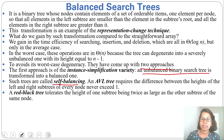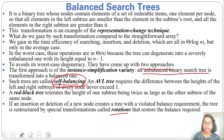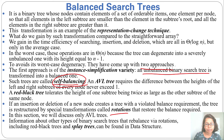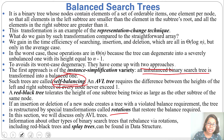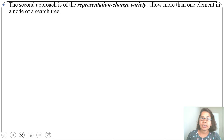The left subtree may be twice the right subtree, or vice versa. Self-balancing is done by rotation. In this section, I will just discuss AVL trees; other trees that rebalance via rotation, including red-black trees and splay trees, can be found in data structures. This is the first approach — instance simplification variety — converting an unbalanced binary search tree into a balanced one by rotation.